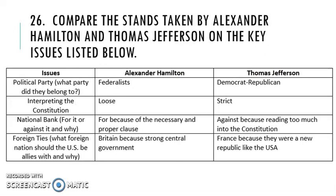Question 26 asks you to compare Alexander Hamilton and Thomas Jefferson on key issues. Key issue one — political party: Alexander Hamilton is the founder of the Federalist Party, during Washington's administration. Thomas Jefferson is the founder of the Democrat-Republican Party. Key issue two — how they interpret the Constitution: Hamilton is a loose interpreter, Thomas Jefferson is a strict interpreter. Hamilton is a dreamer; Jefferson is a literal guy — if it's not written, you can't do it.